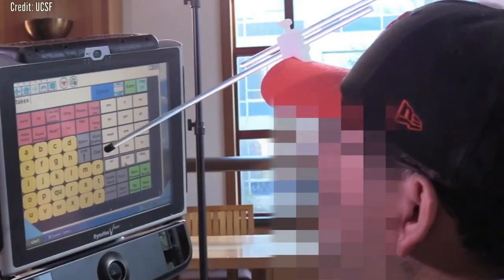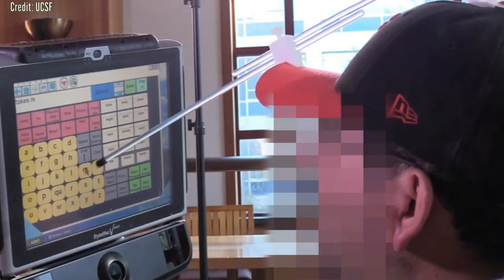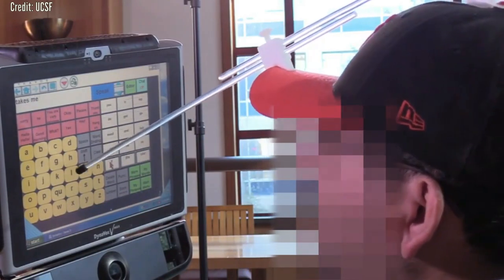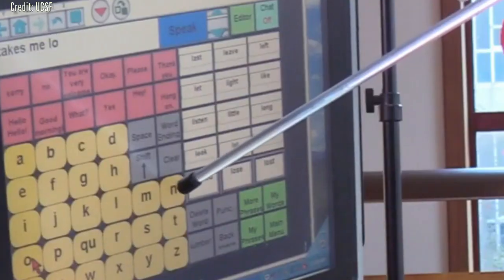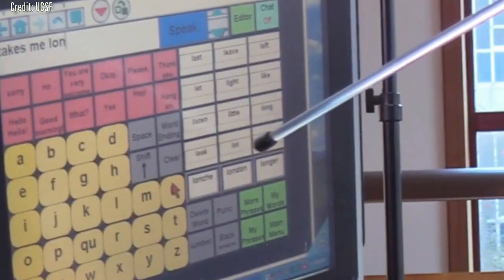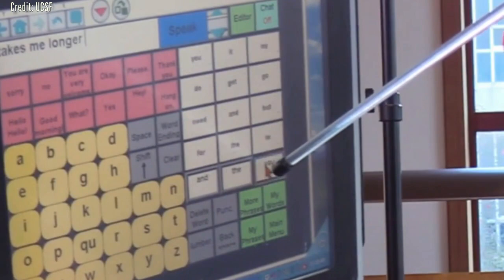Previously, work in the field of communication neuroprosthetics has focused on restoring communication through spelling-based approaches to type out letters one by one in text. Chang's study differs from these efforts in a critical way.